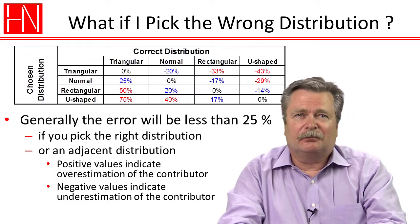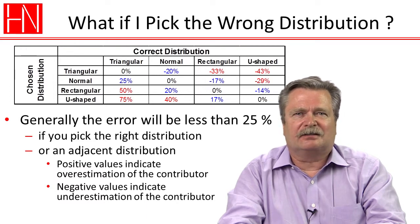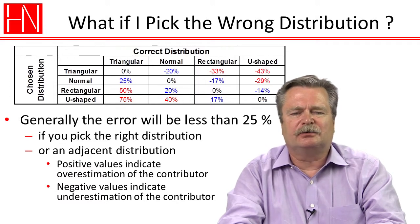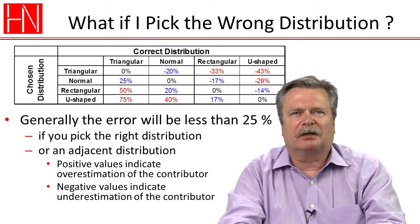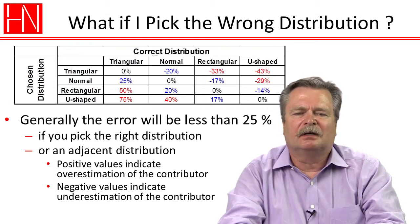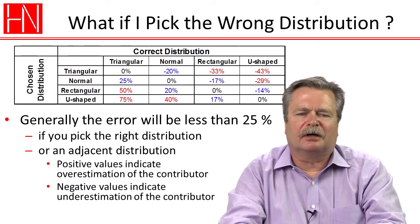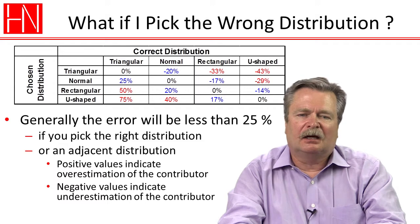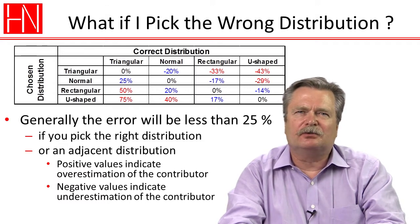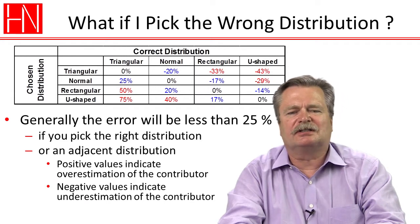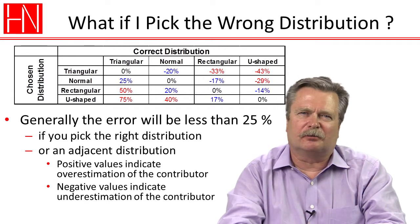But let's say we have something that really is a normal distribution, but we model it as a rectangular distribution. You see in the table that we have an error of twenty percent — meaning we overestimate the contributor by twenty percent. On the other hand, if we had something that really was a rectangular distribution and we model it as a normal distribution, then we underestimate that contributor by seventeen percent.